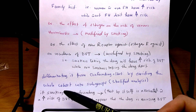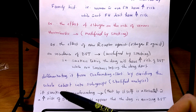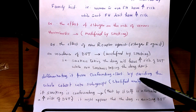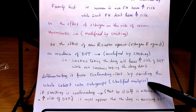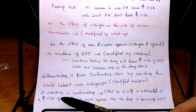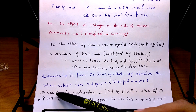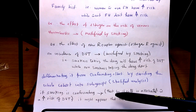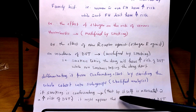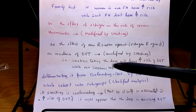We differentiate effect modification from confounders by dividing groups into subgroups — that's stratified analysis. In this case, if smoking were a confounder, it would have to be associated by itself with both the exposure and the outcome, meaning it would have to independently increase the risk of DVT.